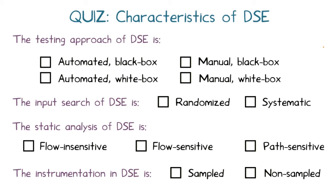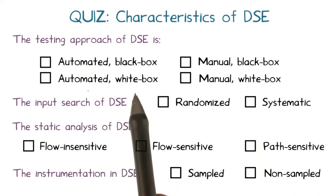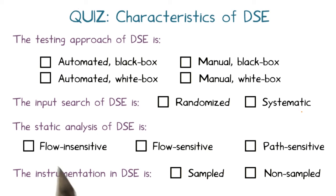Now take some time to answer questions about the characteristics of DSE. The testing approach of DSE is best described as which of the following: automated black box, manual black box, automated white box, or manual white box? The input search strategy DSE uses — is it randomized or systematic? What is the sensitivity of DSE to program structure: flow-insensitive, flow-sensitive but not path-sensitive, or path-sensitive? Which best describes the instrumentation performed in DSE: sampled or non-sampled?